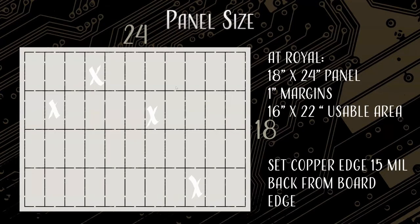If I'm putting a bunch of boards together, at what point do they get separated? At what point in the whole process do they start to look like individual boards? That's going to be after assembly. Usually, boards are put into arrays to help and aid with the assembly process when you're doing pick-and-place machines. After the parts have been put on, that's when they get popped out and you'll start to see your single individual boards.